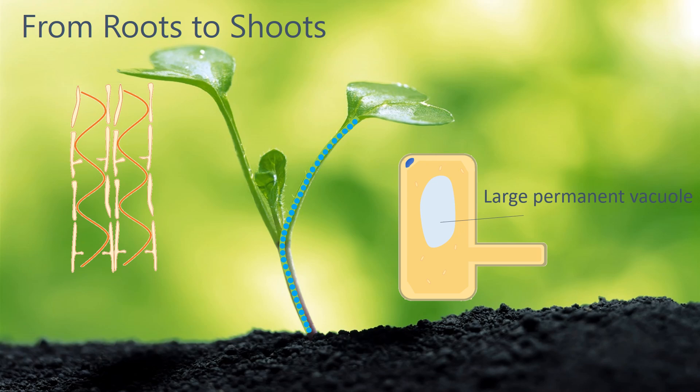In the leaf the guard cells can open and close the stomata to reduce the amount of water lost. This movement of water through a plant is known as transpiration.